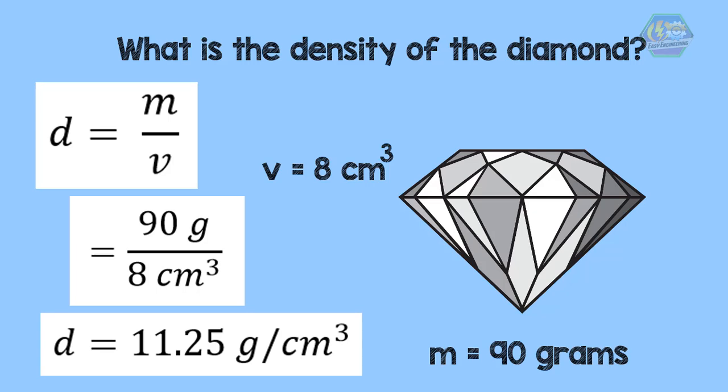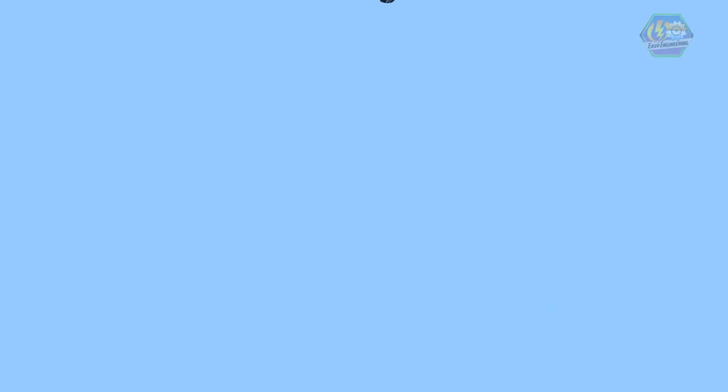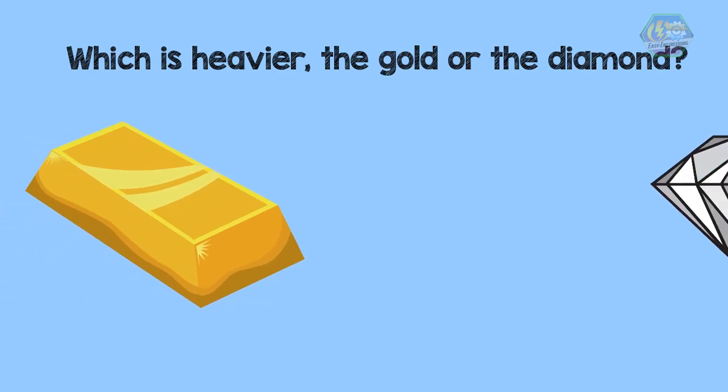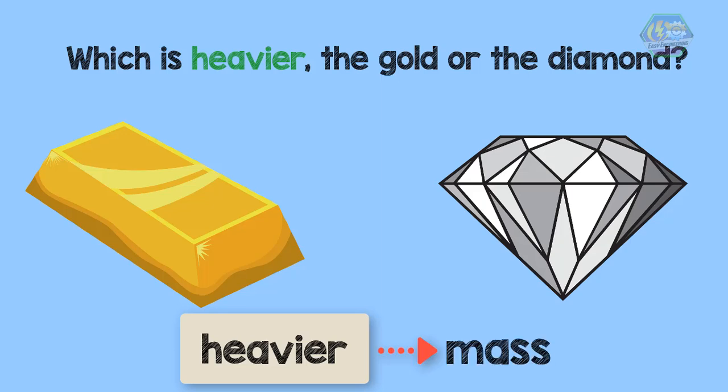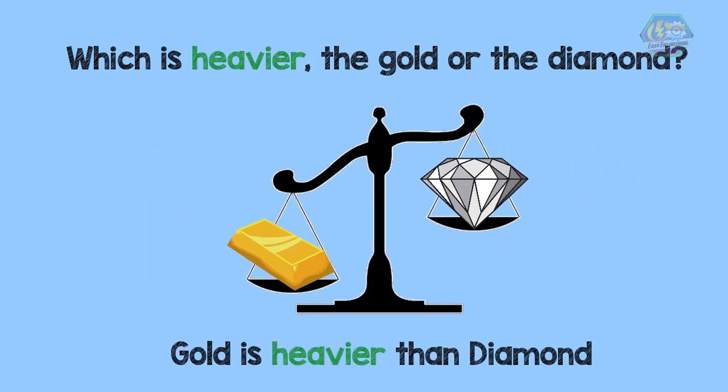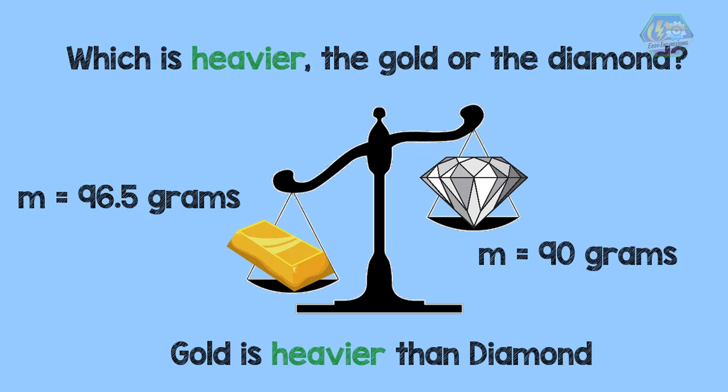Now let me ask you some questions based on the two examples given. Which is heavier, the gold or the diamond? The hint here is the word heavier, which refers to mass. Therefore, gold is heavier than diamond since gold has a mass of 96.5 grams while diamond has only a mass of 90 grams.